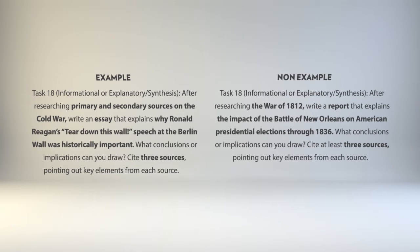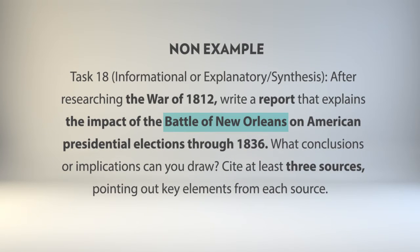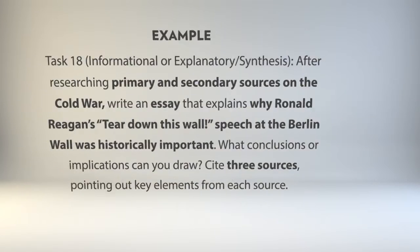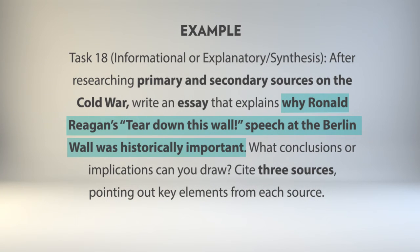Both examples here ask students to delve into the past. However, the first task is framed in a way that makes it more significant than the second. The Battle of New Orleans made Andrew Jackson a national hero — but how many think it's a central issue in U.S. history? This topic is too small to give it weeks of attention. The Cold War task is just the opposite. It asks students to both analyze a famous speech and utilize their research on the Cold War — a topic big enough in terms of the discipline of history to invest the time it will take to complete.